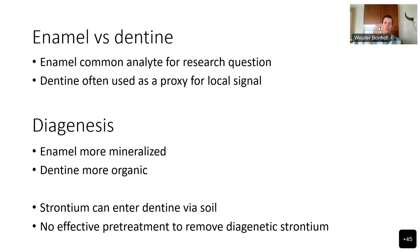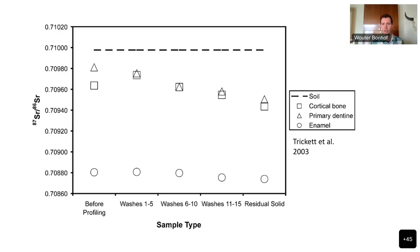No pretreatment protocols have yet been developed that can completely remove all this diagenetic strontium from dentine. This is shown by studies such as Trickett et al., in which the dashed line is the local signal range in strontium isotope ratios, circles are the enamel, and triangles are the dentine. There is a very clear difference between the strontium isotope ratios in the enamel versus those in the dentine, which are much closer to the local range, showing they've been affected by diagenesis.